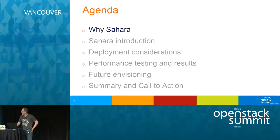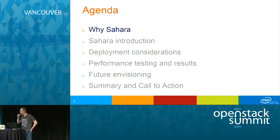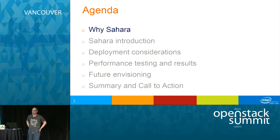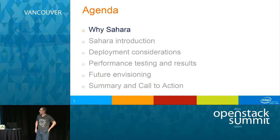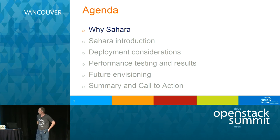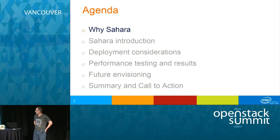We're going to start with why Sahara. Sahara has been around for a few cycles now — it's big data on OpenStack. We'll talk about the motivation for having that as a service, go into details about the architecture and features, then cover deployment considerations from a performance perspective: containers, bare metal, VMs, where your data is located. Then we'll show performance results from Intel and discuss where Sahara might go, specifically for the Liberty cycle.